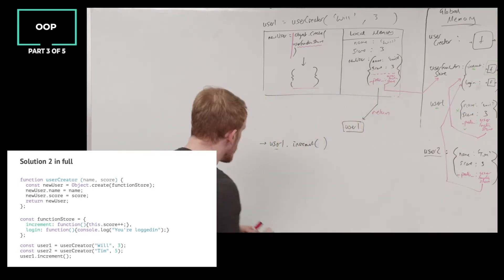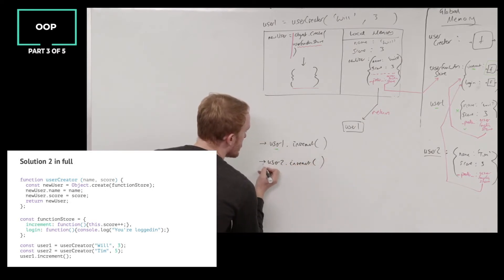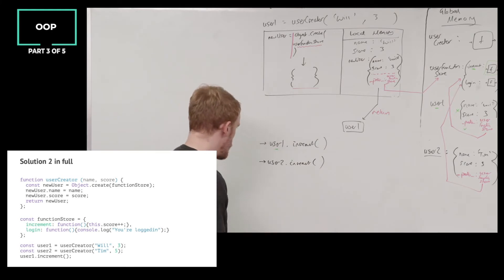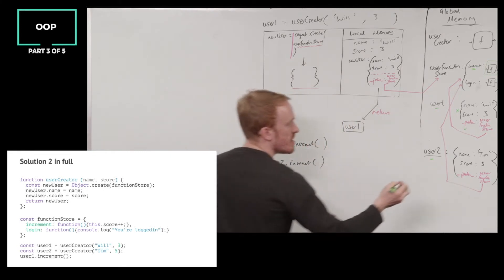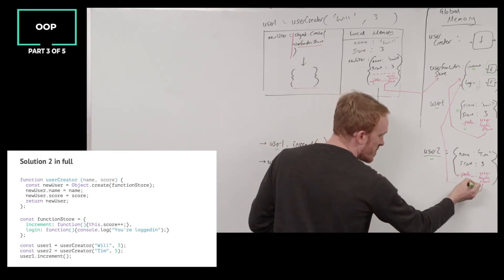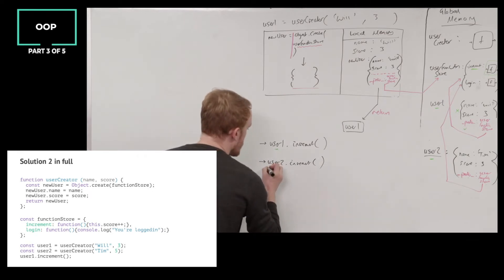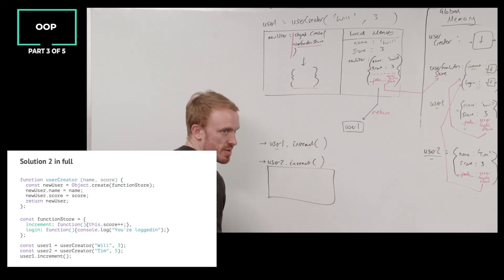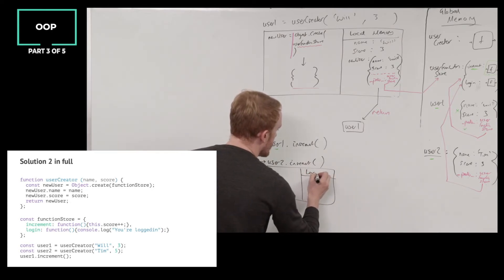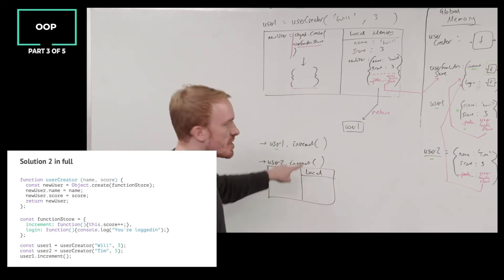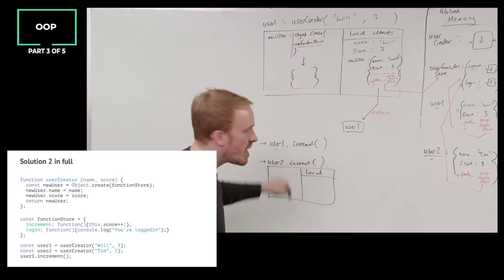I can also run user2.increment. Walk me through the process: you're going to first look in memory for user2 and see that there is no increment function. You go to proto, which takes you to userFunctionStore, and you find the increment function. Then I take that code and make an execution context on which to run it.